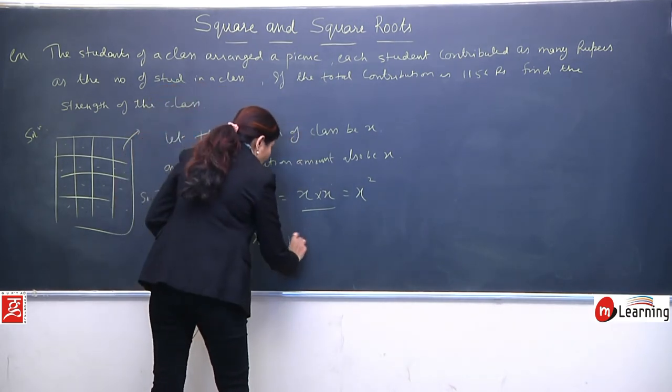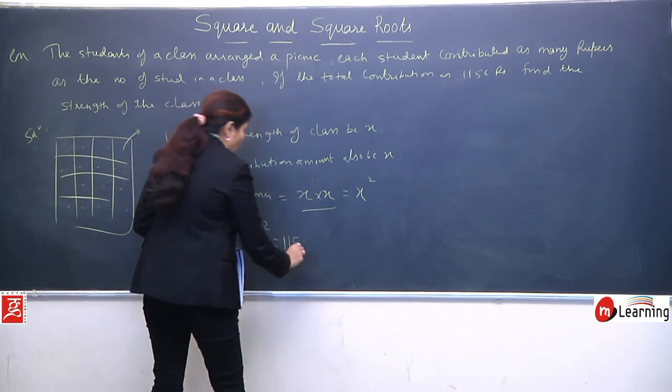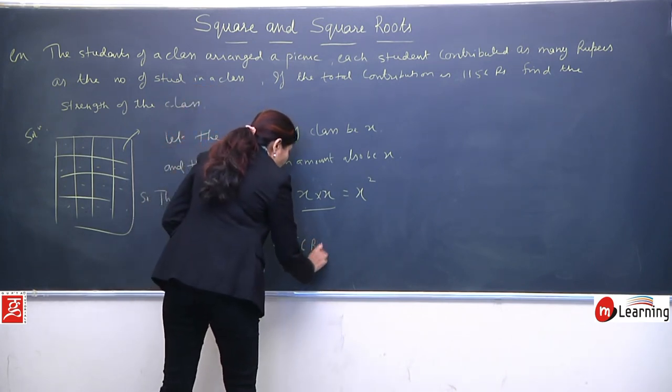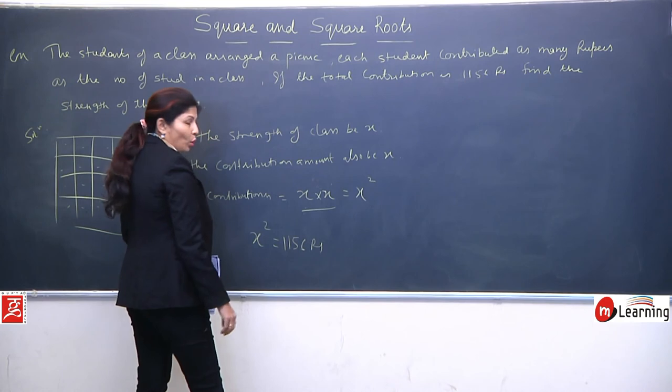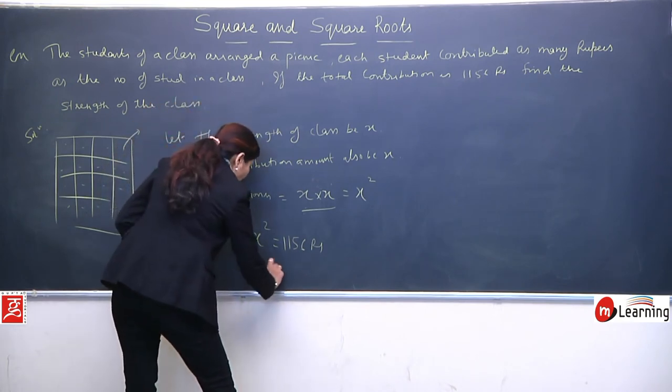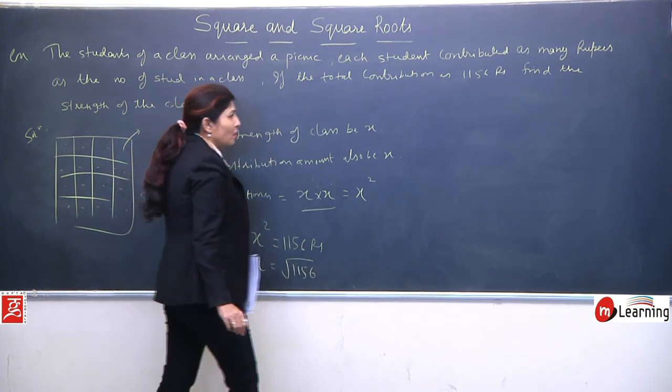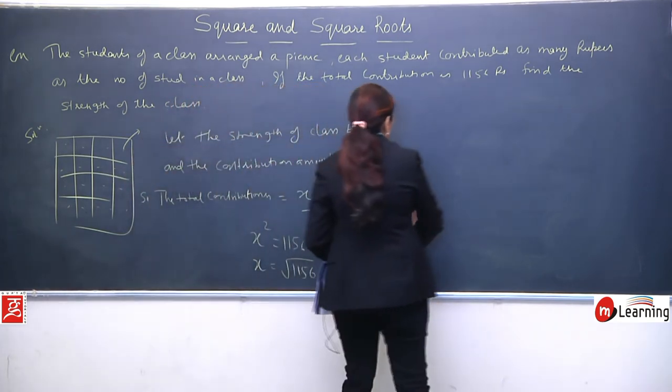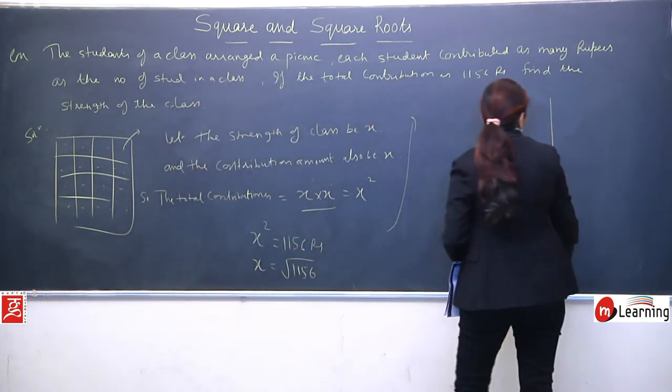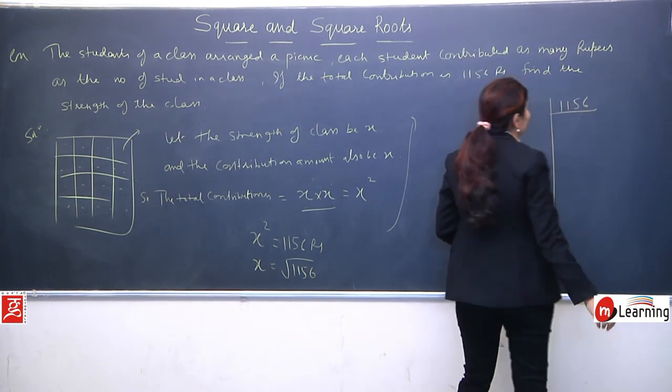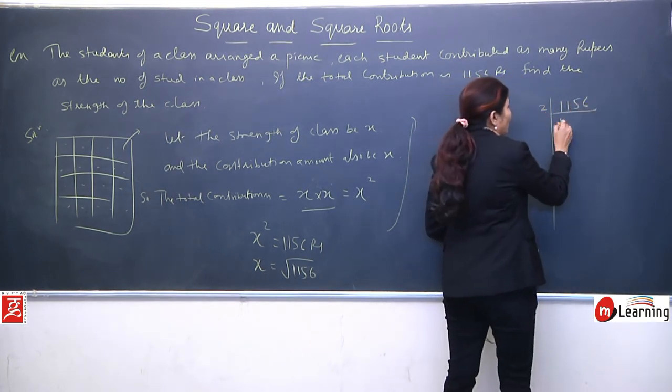Now total contribution amount is already given to us. Whatever all students gave me together, that is 1156 rupees. So this becomes your equation. Now you need to find x, so it becomes x equals square root of 1156. Now we'll solve this, so we need to prime factorize 1156. Divide by 2. 2 fives are 10, 2 sevens are 14, 2 eights are 16, 2 twos are 4, 2 eights are 16, 2 nines are 18.